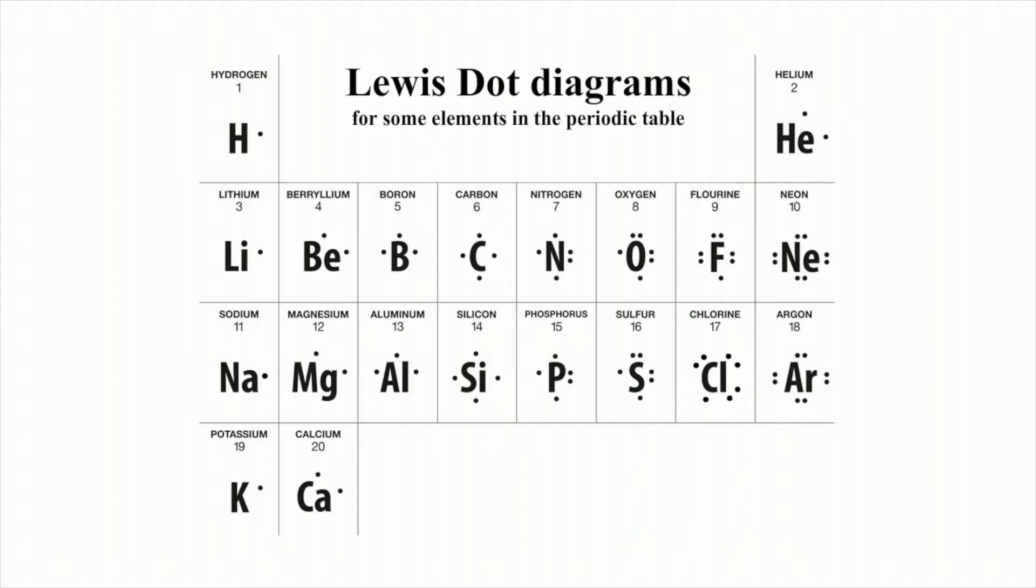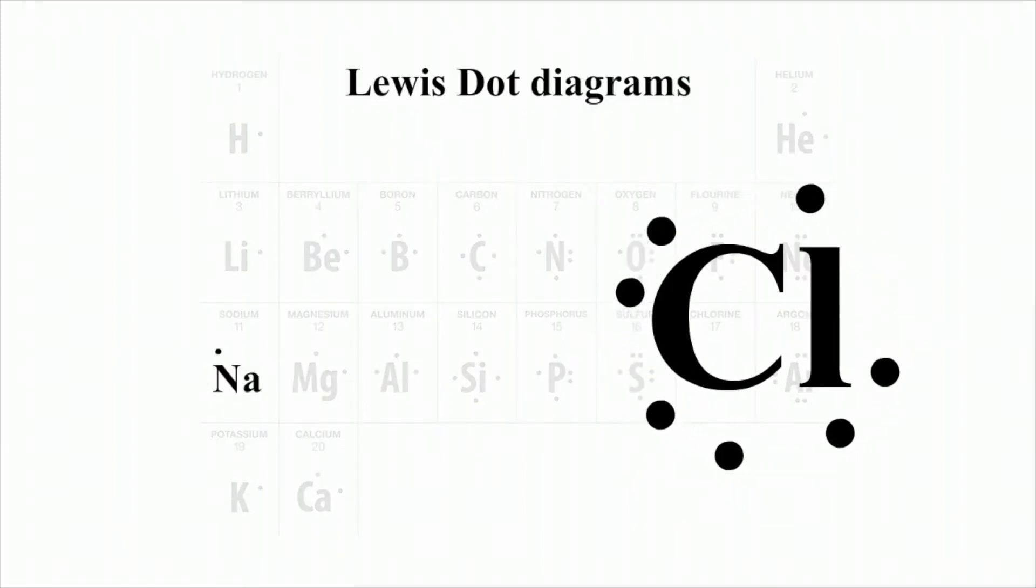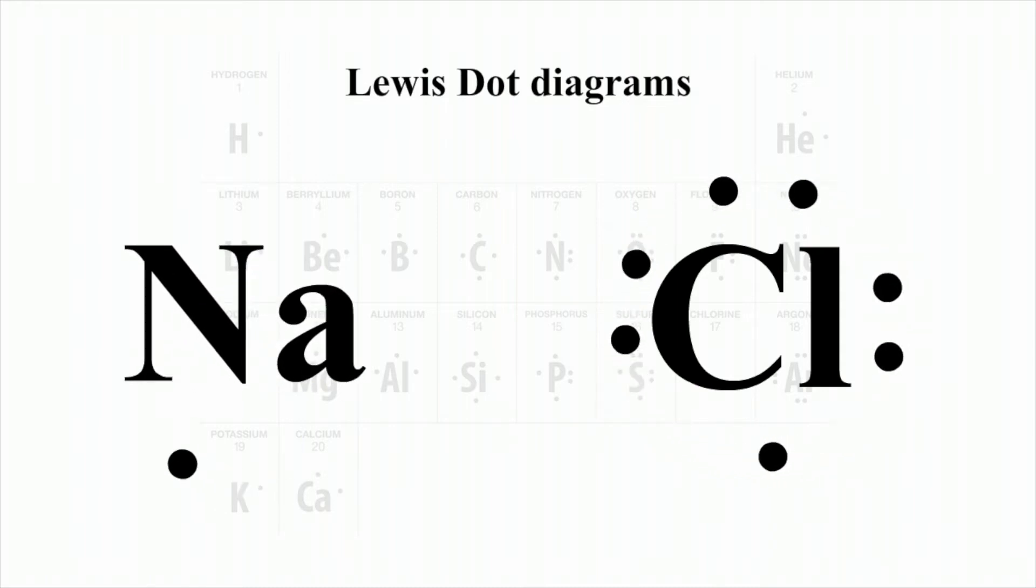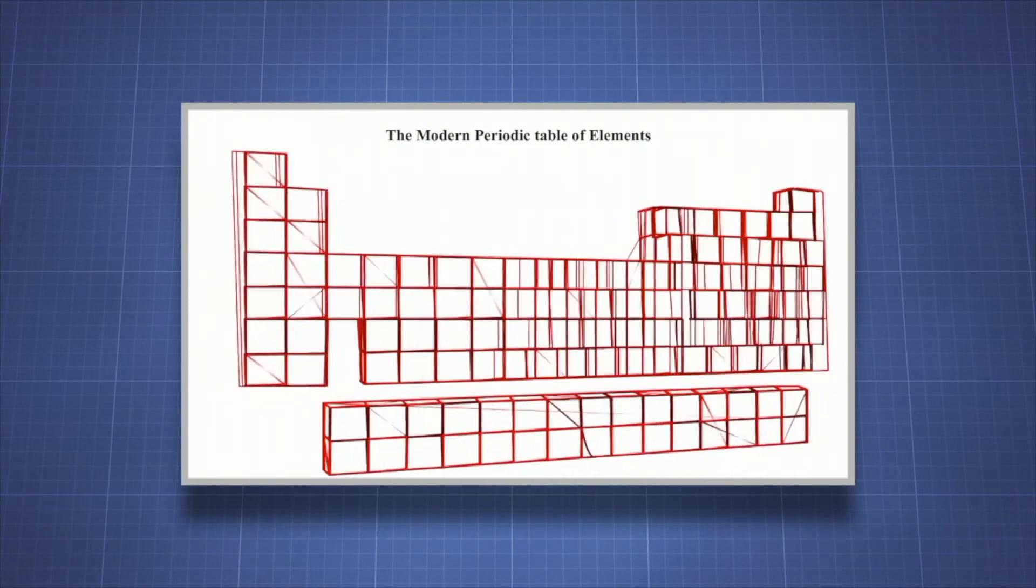When the two elements react, sodium loses an electron, chlorine gains one electron. Sodium donates its electron to chlorine. The reaction creates a molecule of sodium chloride, which you know as table salt.